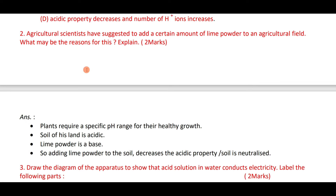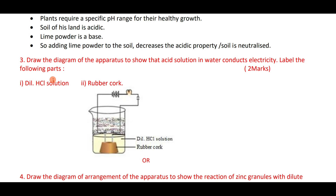Agricultural scientists suggest adding lime to an agricultural field to maintain the specific pH range of the soil so that plants grow healthy. The soil may be acidic, so lime powder — which is a base — is added to neutralize it. Adding lime decreases the acidic property of the soil.